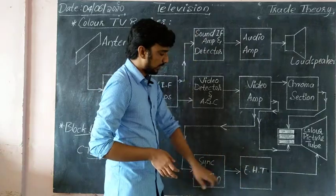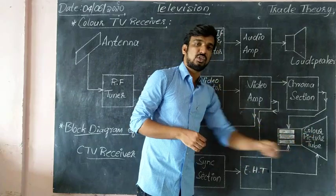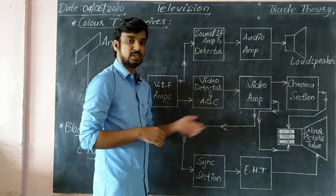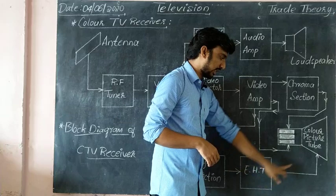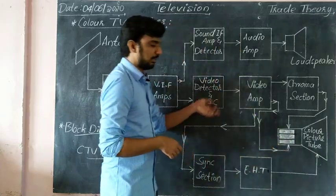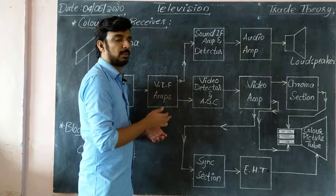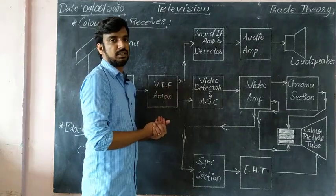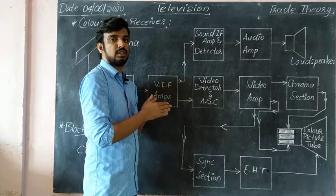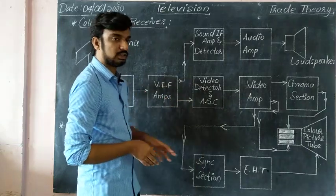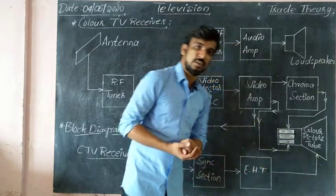Next, the EHT section. The EHT section provides extra high tension voltage, which is added to the picture tube as the anode supply — extra high voltage. This EHT section is a generator. The color picture tube requires 27kV supply, which depends on the picture tube size. Normally, a 24-inch color picture tube requires a 27kV positive supply.